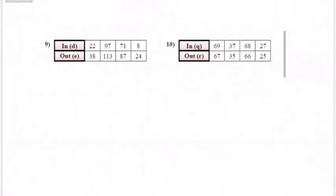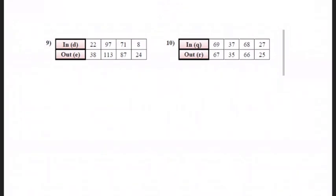Okay, two more. Okay, pause, and then hit play when you're ready. All right, next, this one right here is d plus 16 equals e. And then the number 10 is q minus 2 equals r.